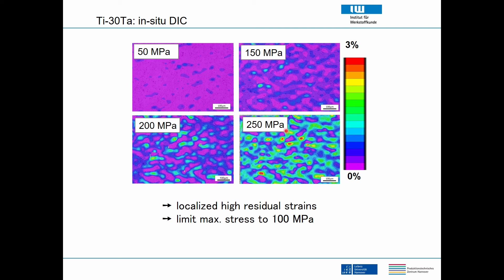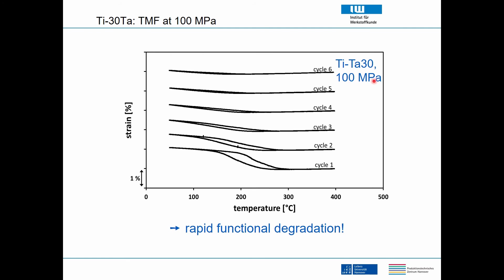We ran in-situ digital image correlation tests: at 50 MPa after unloading the strains were almost fully reversible, but at around 150 MPa some islands of irreversible strain appeared. We therefore decided to limit all our tests to 100 MPa. At 100 MPa the first cycle looks very good — around one percent reversible strain — but already at the second cycle there is quite some change, and the material has fully degraded by around four cycles.